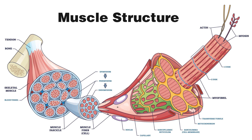An interesting thing to point out is that within the fascicle, all the different muscle fibers aren't necessarily going to be of the same type. Usually you'll have a mix of slow twitch and fast twitch fibers within the same fascicle, but the ratio can differ between muscles and between individuals as well.